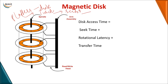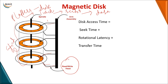Data is stored on sectors. To access them, there is an arm assembly with a read-write head. Data can be stored on both surfaces of a platter, so there is a separate read-write head for the top surface and a separate one for the bottom surface. The total combination of all these disks at the same radius is called a cylinder, and each platter has its own read-write head on both the top and bottom surfaces.